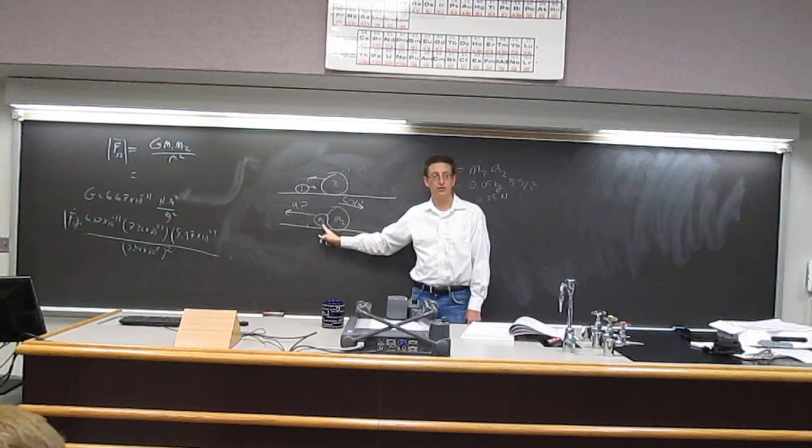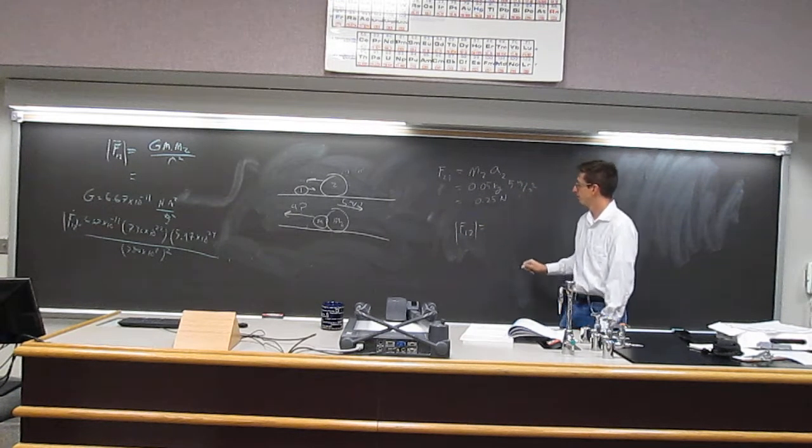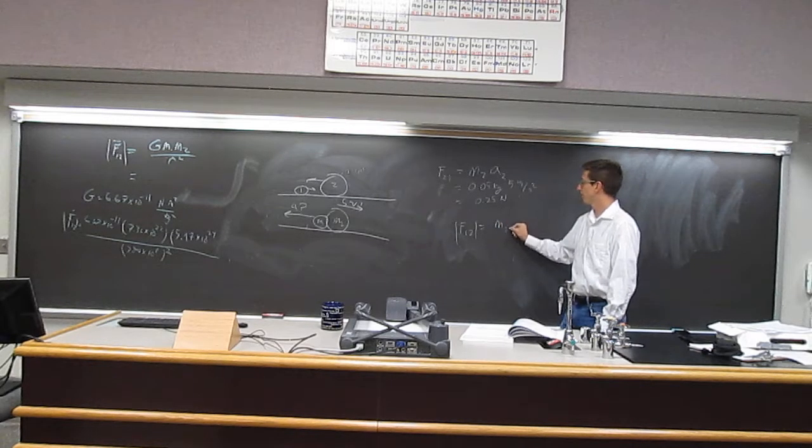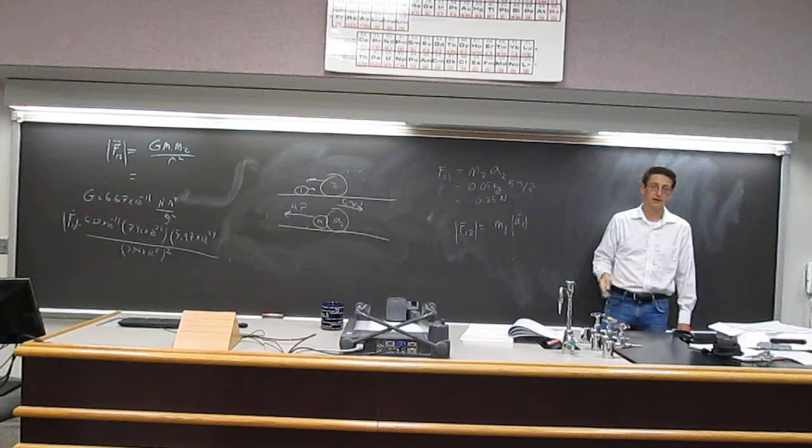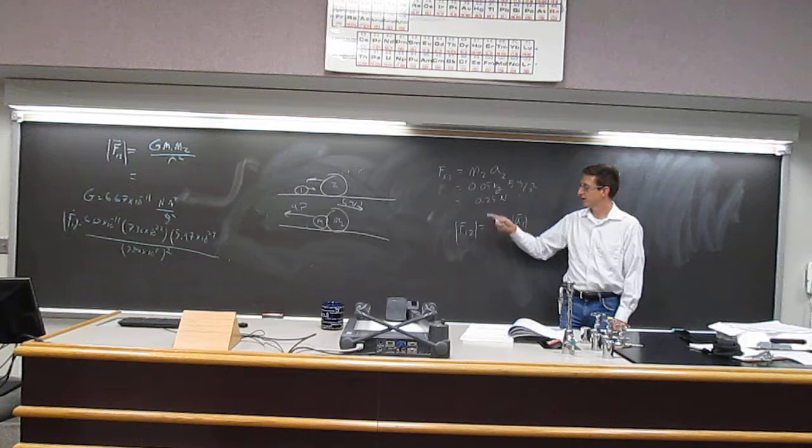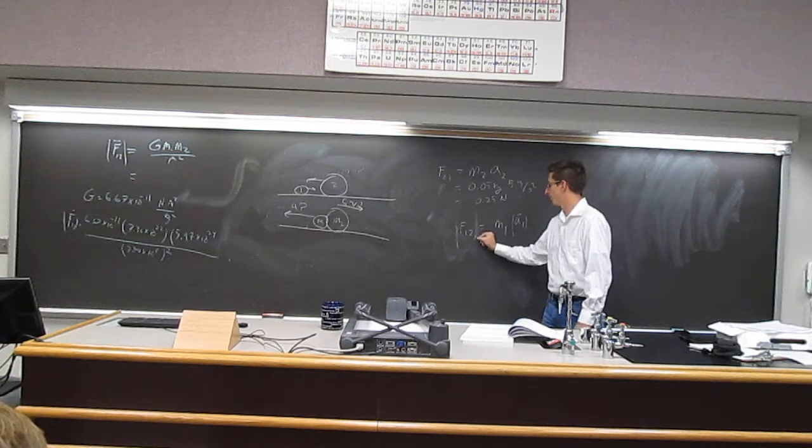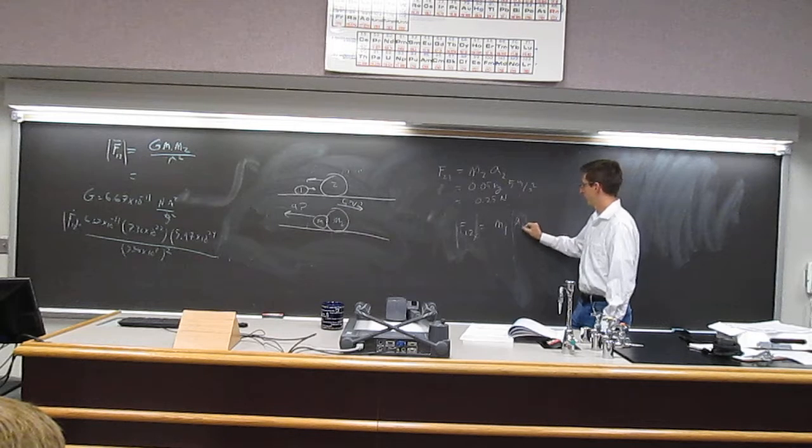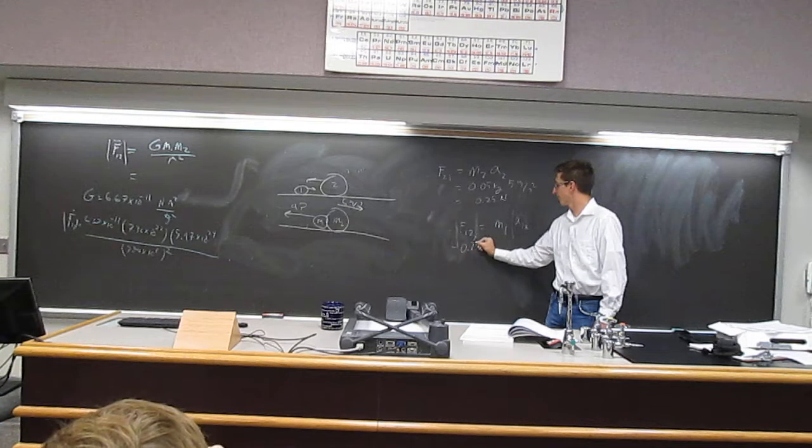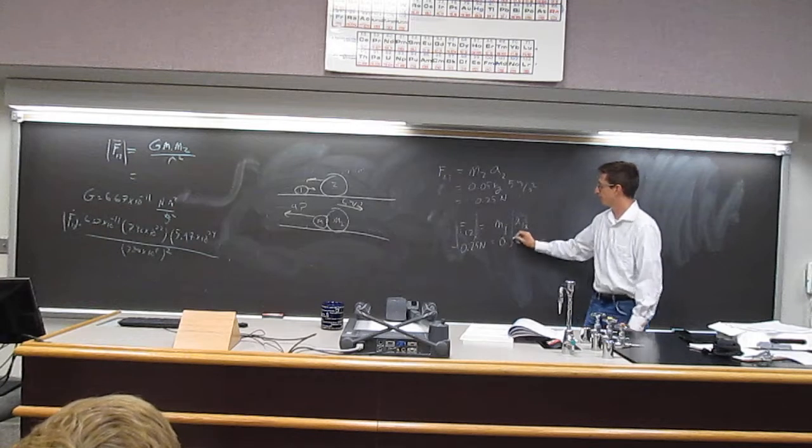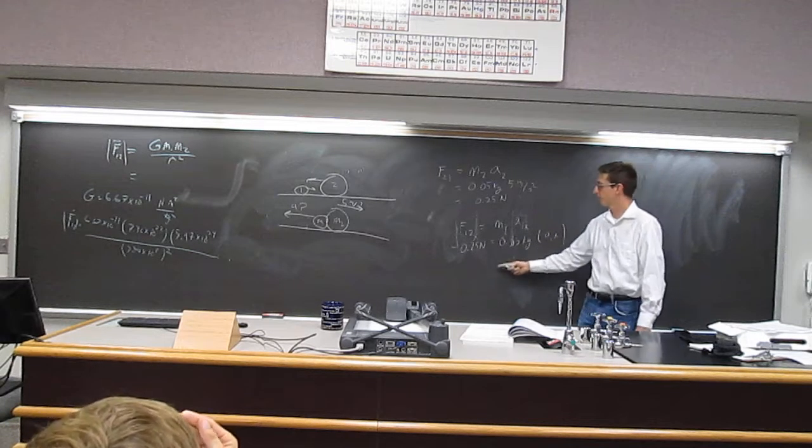So 50 grams times 5 meters per second. So 0.05 kilograms times 5 meters per second squared, 0.25 newtons, right? So that's the force. Now let's see what the acceleration due to that force would be on mass 1. So force on 1 by 2, the magnitude of it would be the magnitude of mass 1. So that's the acceleration of mass 1, the magnitude of the acceleration. I guess we could say that that's in the negative x direction. So I could write force 1, 2, x. It's A1, x.